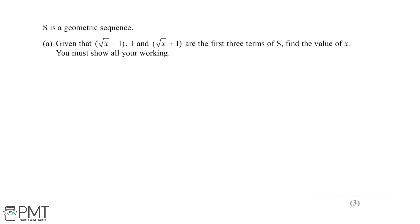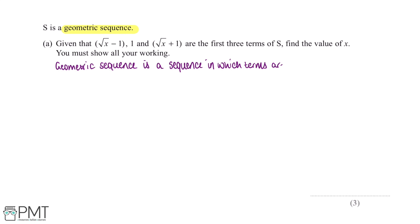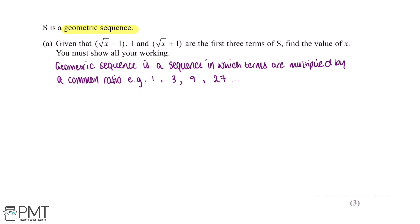The first thing we need to know for this question is what a geometric sequence is. A geometric sequence is a sequence in which each term is multiplied by a common ratio to give the next term. An example of this is the sequence 1, 3, 9, and 27, in which each term is multiplied by 3 to give the next term.